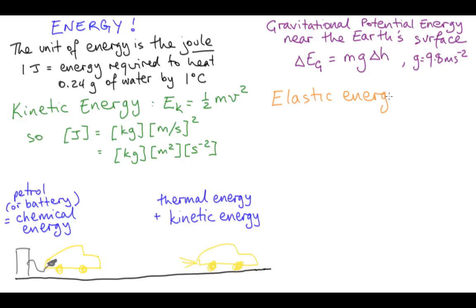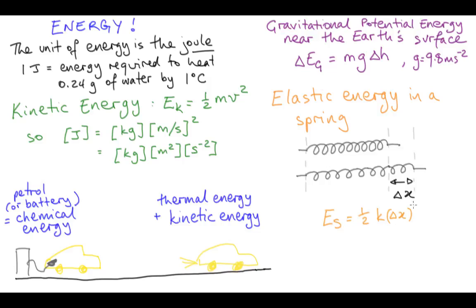Another common type of potential energy related to motion is the elastic energy in a spring. The reference state here is the spring in its relaxed state with no forces being exerted on it. Then if delta x is the change in length from this rest length, the corresponding increase in potential energy is delta E_s equals one-half k delta x squared.